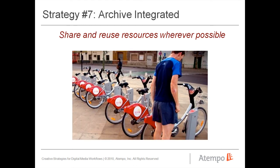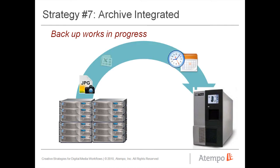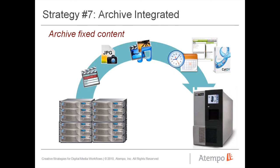Strategy seven: archive integrated — share and reuse resources whenever possible. What can be shared or repurposed? Servers, storage, and networks for a start. With backup and archive from a single vendor, the same storage and network that you use to backup works in progress can be used to archive fixed content — all that raw footage, those completed projects, and the less used content.